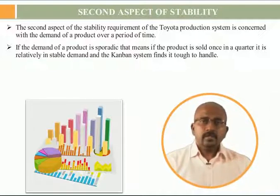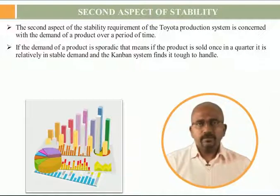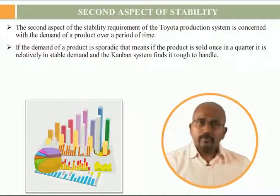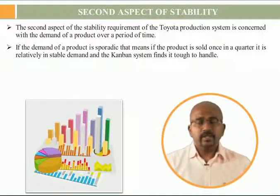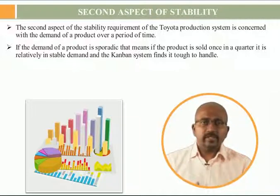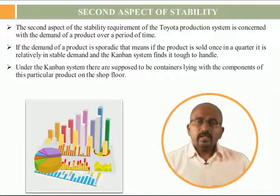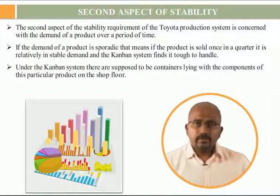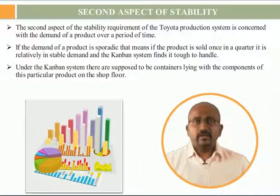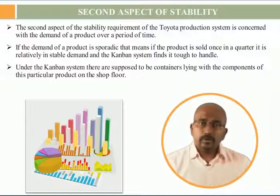In normal production systems, an item whose lead time is two weeks and whose order comes once a quarter will be seen on the shop floor for two weeks. After that demand is satisfied, there is zero inventory on the shop floor. However, under the Kanban system, containers with components of that particular product are supposed to lie on the shop floor. So if a company has 5,000 or 10,000 products with sporadic demand, the amount of inventory lying on the shop floor will be huge.